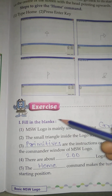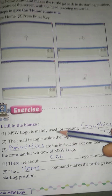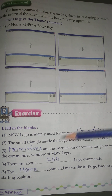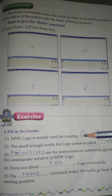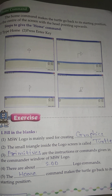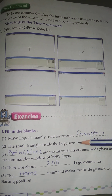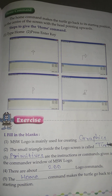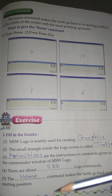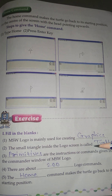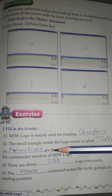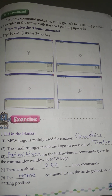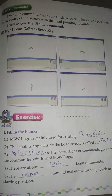Exercise: Fill in the blanks. Number 1: MSW Logo is mainly used for creating graphics. Number 2: The small triangle inside the logo screen is called turtle. Number 3: Primitives are the instructions or commands given in the commander window of MSW Logo. Number 4: There are about dash logo commands. Number 5: The Home command makes the turtle go back to its starting position.